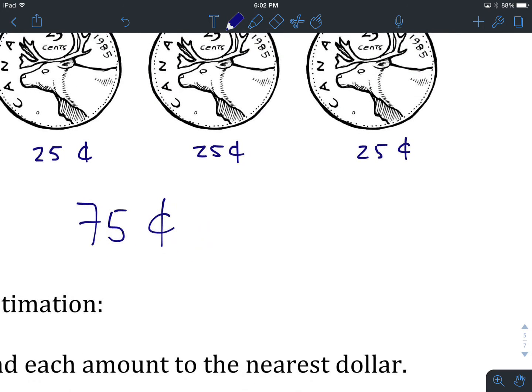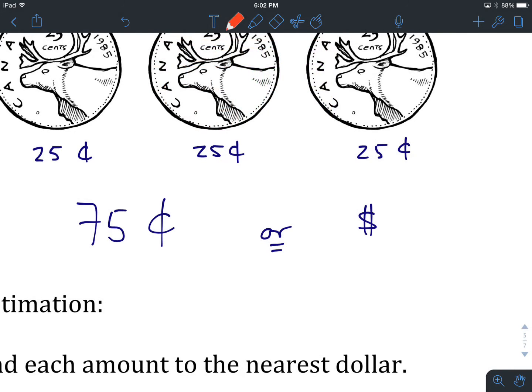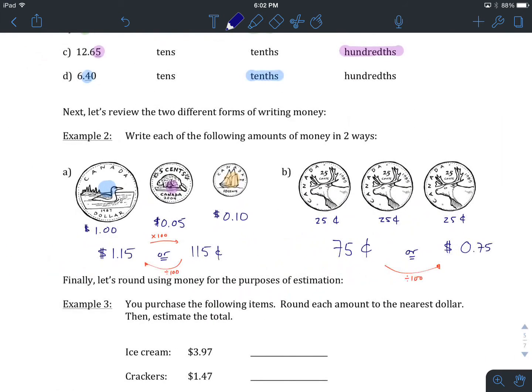The second notation we want is the dollar notation. How many dollars is that? If we're going from cents to dollars, we divide by one hundred. That gives us seventy-five divided by one hundred, or zero point seven five dollars. That's how we write our two different forms of money, cents and dollars.